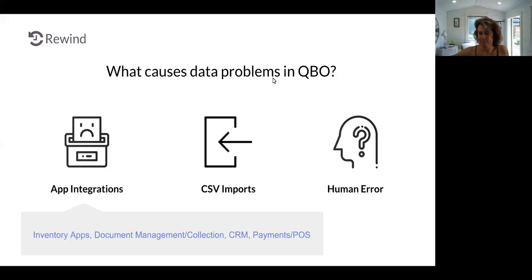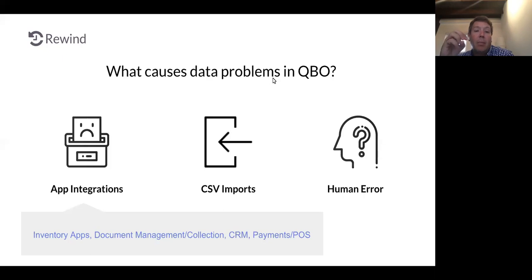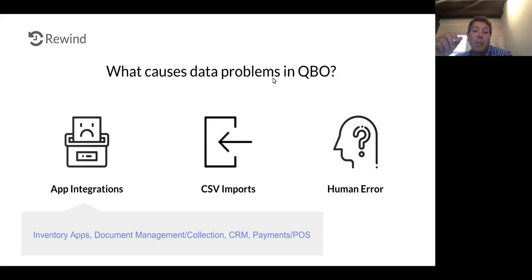The second area where we see a lot of problems is CSV imports. Anytime people are dealing with CSV files, it's a recipe for disaster — it's a very particular format. Special characters like accents, commas, and apostrophes can cause problems in those imports. They're very finicky processes. If you're importing data via CSV, you really need to have a backup before doing that.